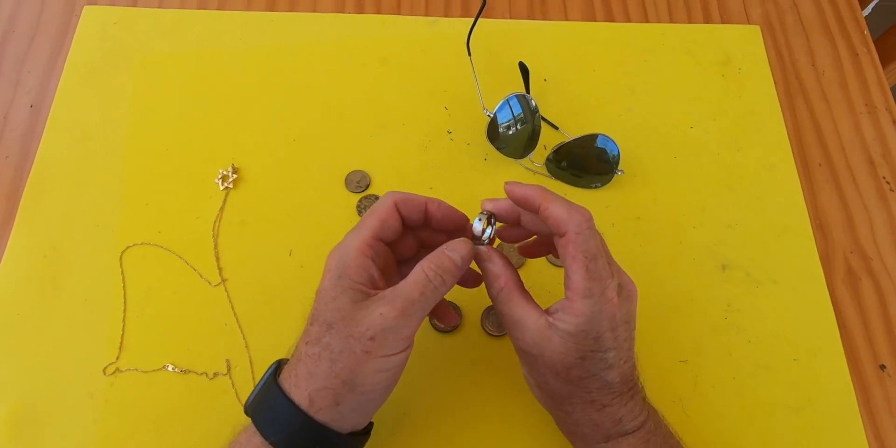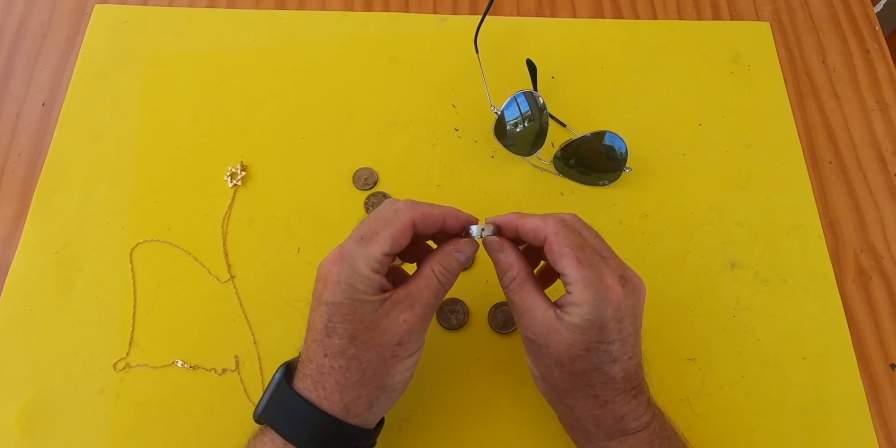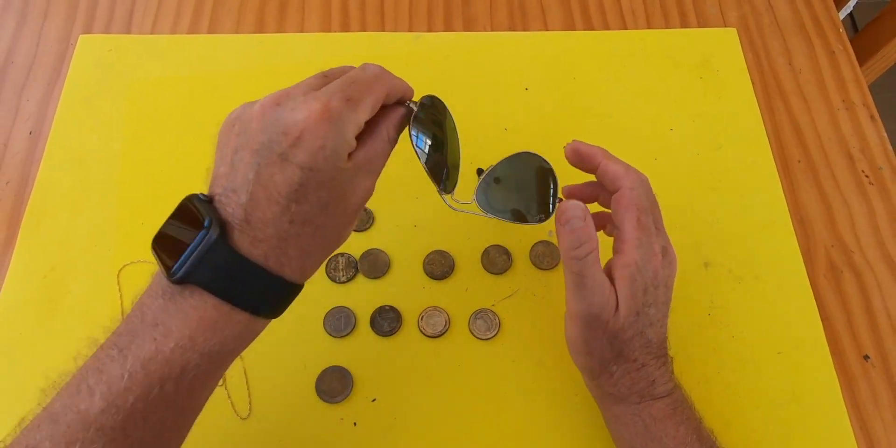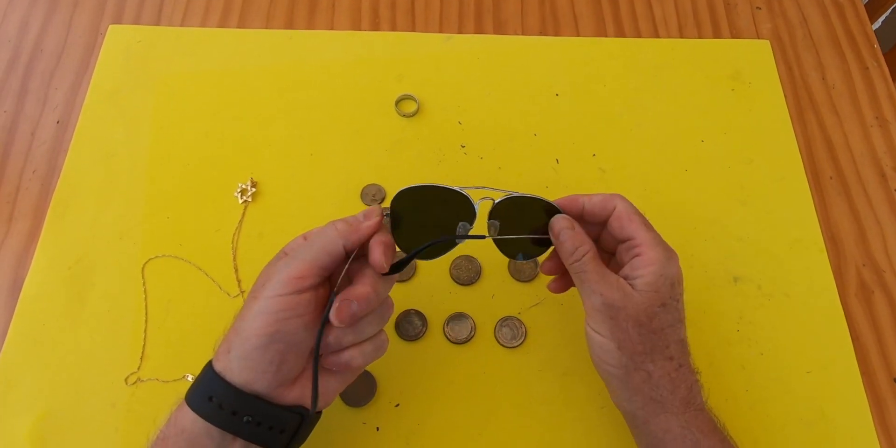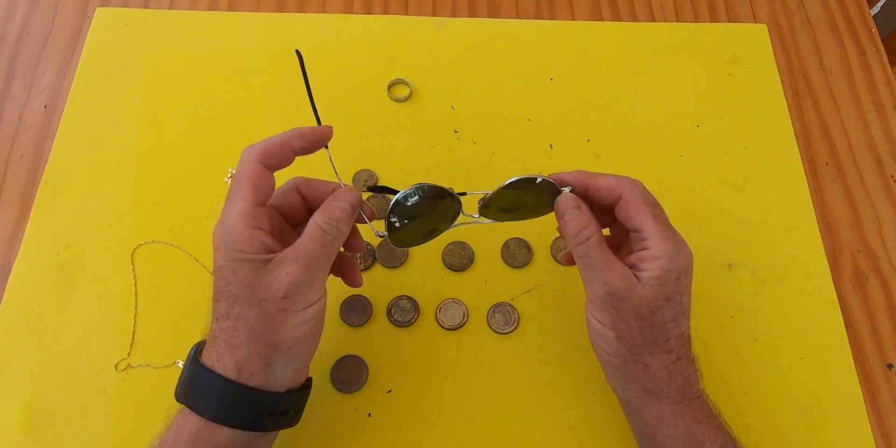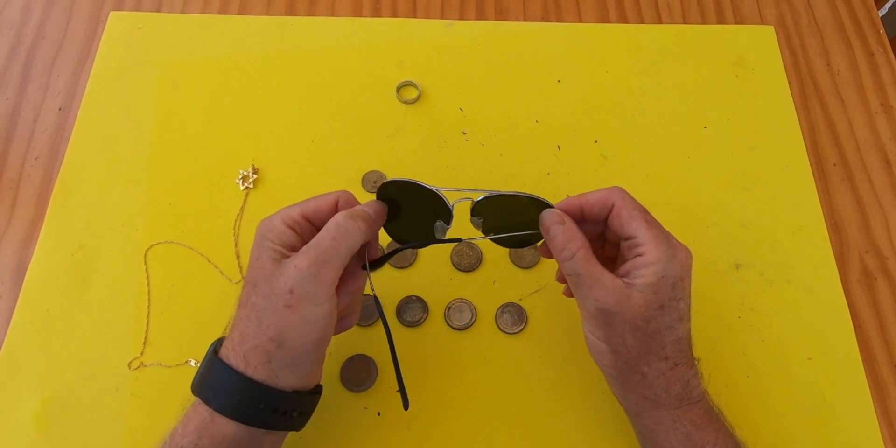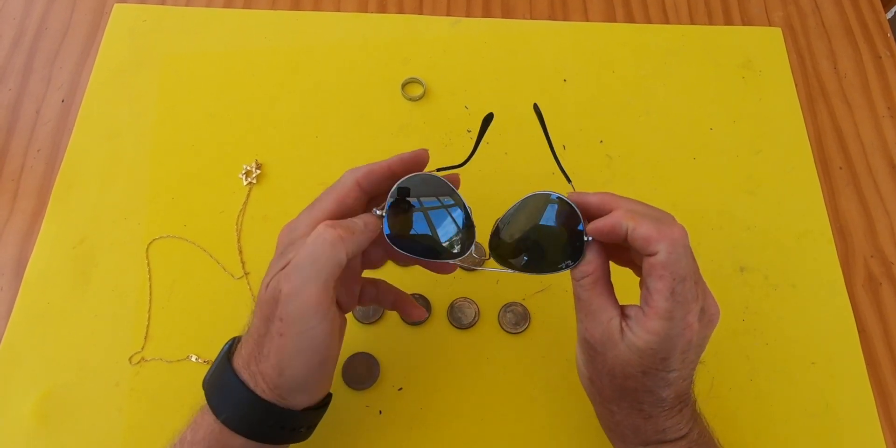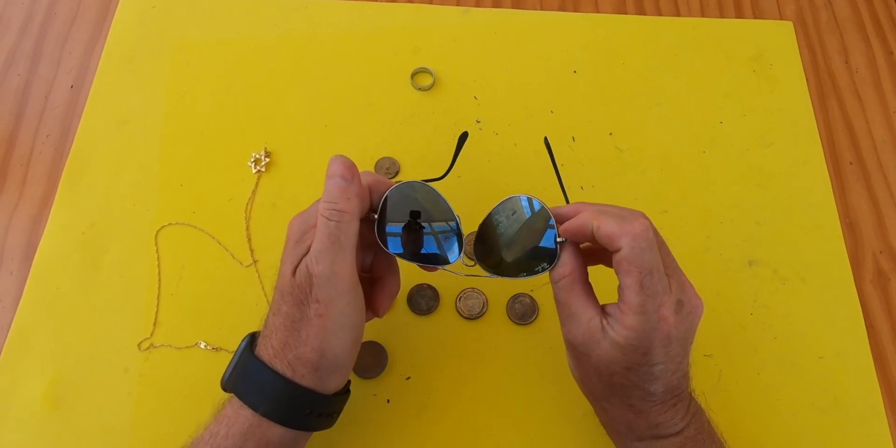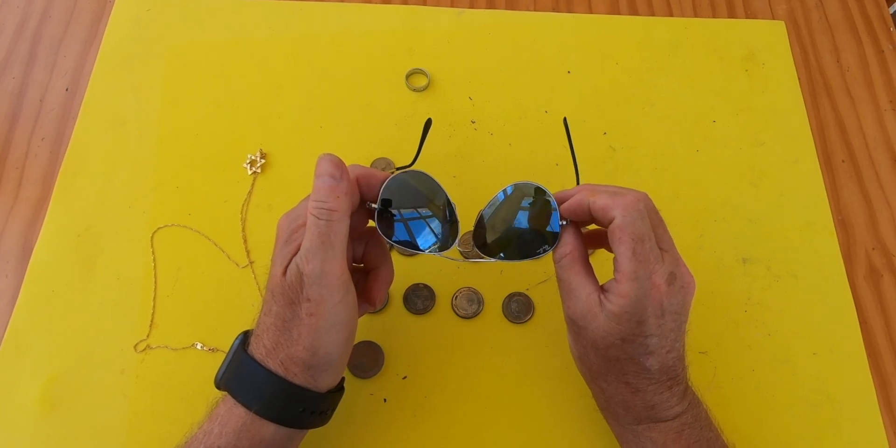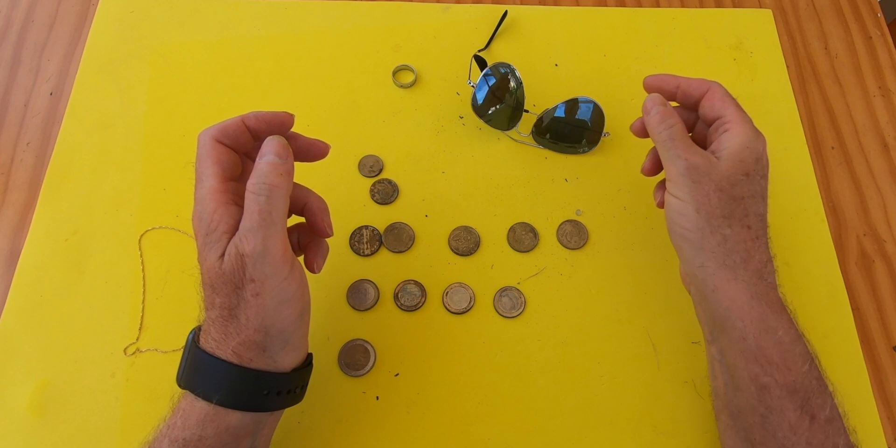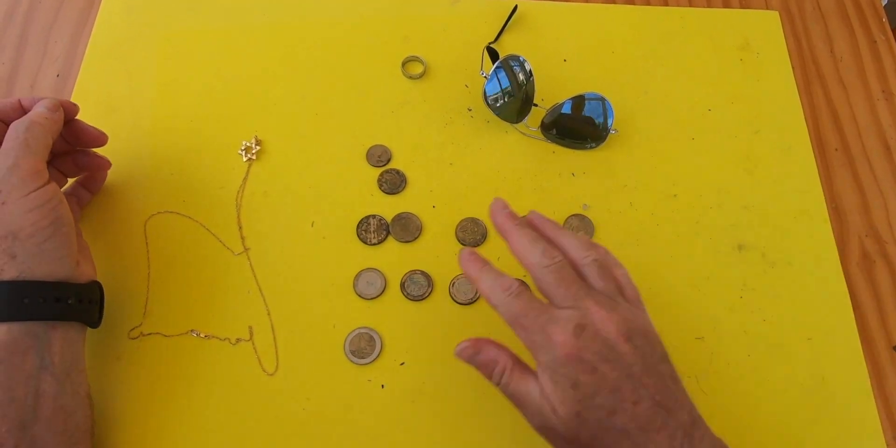So what have we got on the table today? Well, a stainless steel ring, a pair of Ray-Ban glasses. Unfortunately, I had the scoop caught them when I was digging them up. I may be able to bend it back, but there is a fairly nasty scratch on the lens, so not sure. I'll have to have a look at that a bit later on. Then a few coins.